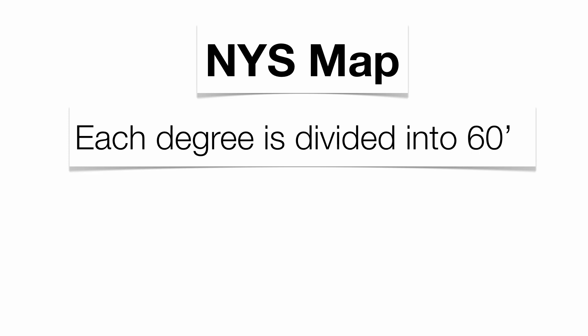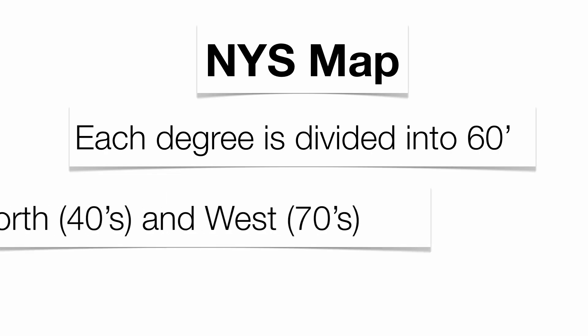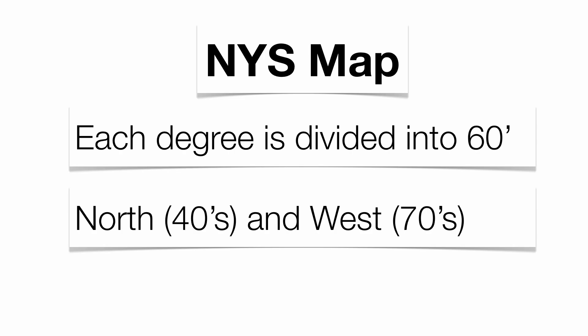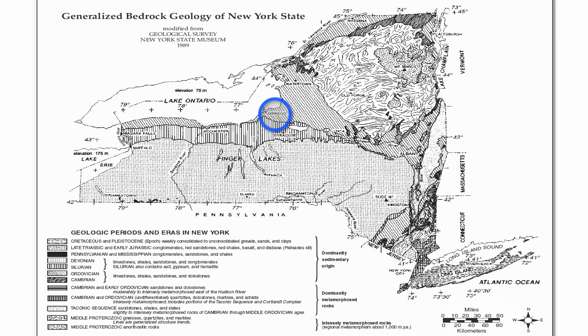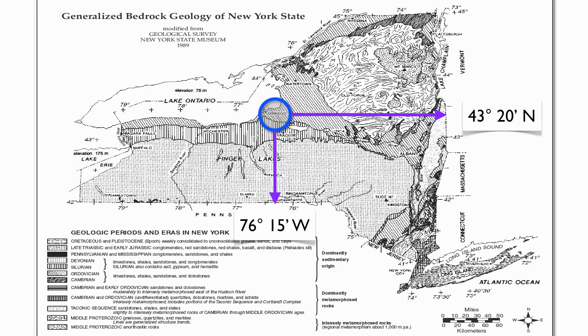There's a map in your reference table called the New York State generalized bedrock map on page three, which tells you a little bit about degrees for cities in New York State. It also shows that you can take your degree values and break them up into a more specific unit called a minute — each degree is divided into 60 minutes of latitude or longitude. The numbers in the forties are latitude north of the equator; numbers in the seventies are longitude west of the prime meridian. A city like Oswego falls between 43 and 44 degrees north, so we say it's about 43 degrees 20 minutes north, and between 76 and 77 degrees west, so it's 76 degrees 15 minutes west.